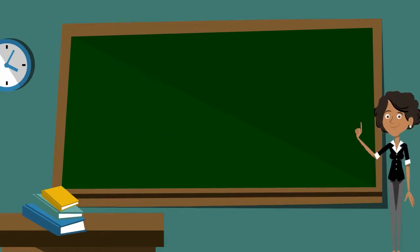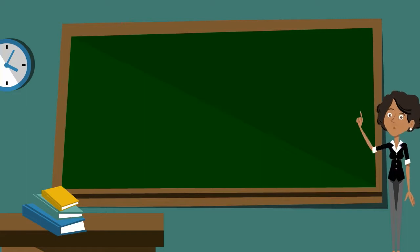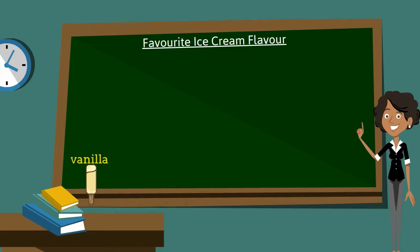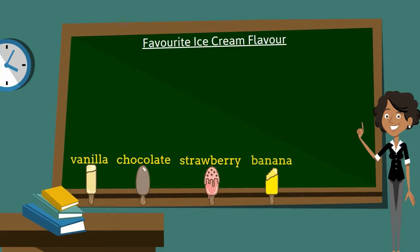There must be a better way to do this. Maybe we could put pictures of ice cream flavors on the boards and get the children to put cubes under the columns of their favorite ice cream flavor. That sounds like a better idea!